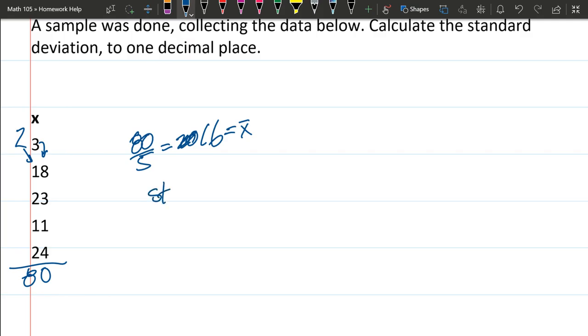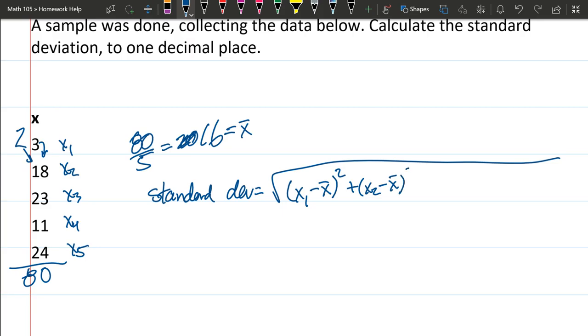So we'll write the standard deviation formula. It's going to be the square root of a lot of stuff, and the first one will be the first x value. So this will be x1, x2, x3, x4, and x5. So it's the first value minus the average squared plus the second value minus the average squared plus the third value minus the average squared plus the fourth value minus the average squared.